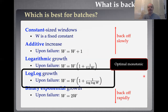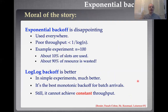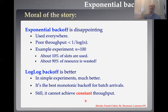It turns out log-log backoff is actually the optimal monotonic protocol — meaning one where you only increase the window size. If you want to only increase the window size, use log-log backoff; it's basically the best you're going to do, and already an improvement over binary exponential backoff. So if you just switch your existing protocol to back off a little slower, you're going to see better performance — a change you can make easily today. The moral of the story: exponential backoff is disappointing in terms of throughput. You're getting like 1 over log N throughput. In an experiment with N=100, you end up wasting 90% of your channel bandwidth. Log-log backoff is better, but even it doesn't achieve constant throughput.